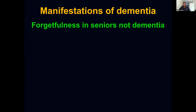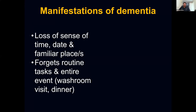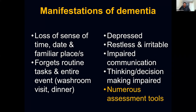Simple forgetfulness in seniors — forgetting where keys are, or a letter you need to write — is not dementia, as those memories return. The features of dementia include loss of sense of time, date, and familiar places; forgetting routine tasks such as whether dinner was eaten or going to the toilet; and later, as the disease progresses, depression, restlessness, irritability, impaired communication, and inability to think or decide.